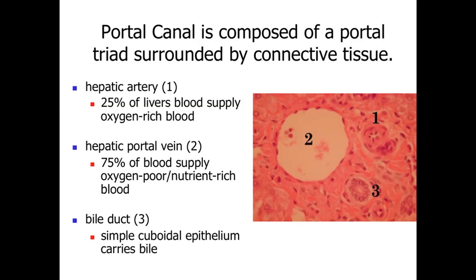If we take a look at the structure—essentially the functional units within the liver—the best way of taking a look at this is the portal canal. Portal canals are specialized structures found throughout the liver in different functional subunits, which surround what's referred to as the portal triad: three structures that help delineate the different functions associated with the liver. In the image to the right, we've got a portal triad with a clear artery marked with one—a branch of the hepatic artery—which is relatively small, carrying about 25% of the liver's blood supply and carrying oxygen-rich blood.